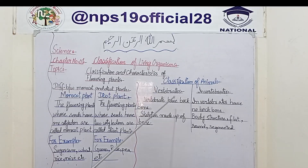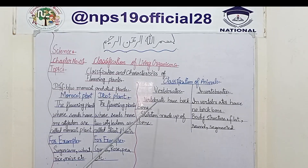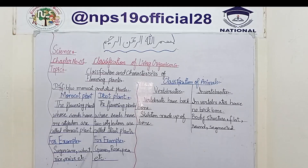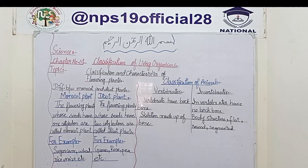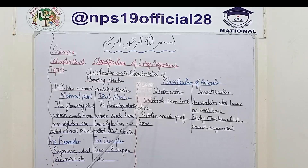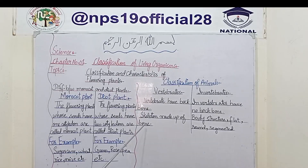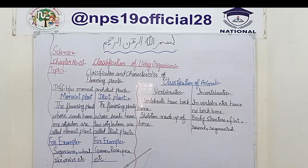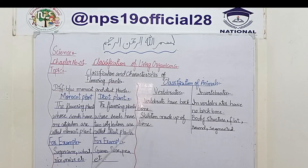Vertebrates are the animals which have a backbone. Those animals which have a backbone, we call them vertebrates — like humans. We have a backbone, so we are vertebrates. Our skeleton is made up of bones, and we know that our body has 206 total bones.